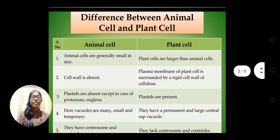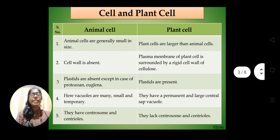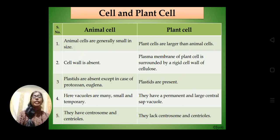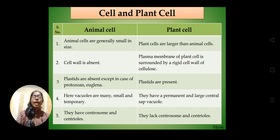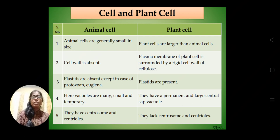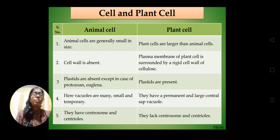What are the differences between animal cell and plant cell? Animal cells are generally small in size but plant cells are larger, though this is not always the case. In animal cells, the cell wall is absent, whereas in plant cells there is a cell wall surrounding the plasma membrane. Plastids are absent in animal cells but present in plant cells. In animal cells, many small vacuoles are present and they are temporary, but in plant cells they are permanent and a large central vacuole is present. In animal cells, centrosome and centrioles are present which help in cell division, but in plant cells centrosome and centrioles are not there.